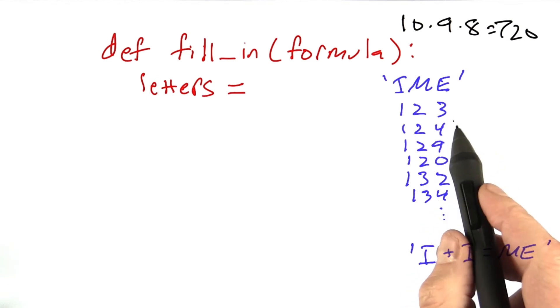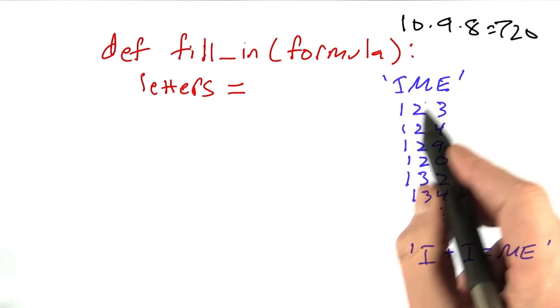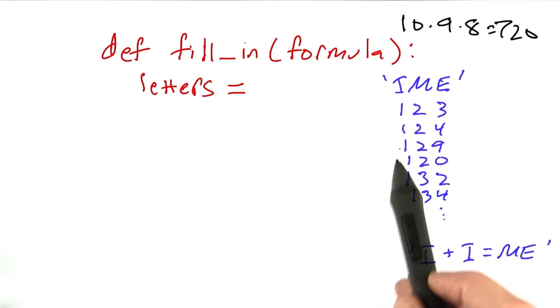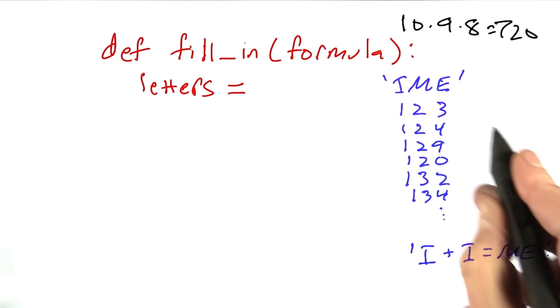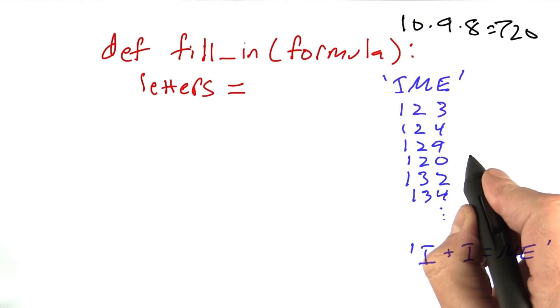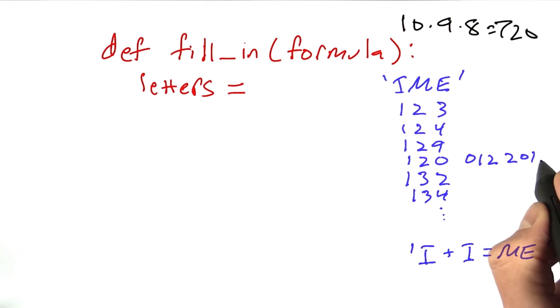Now, what is it? What function gives me all the possible sets of numbers in order? So order matters. 1, 2, 0, for example, is different than 0, 1, 2, or 2, 0, 1, and so on. What function is it that we give it the list of digits?